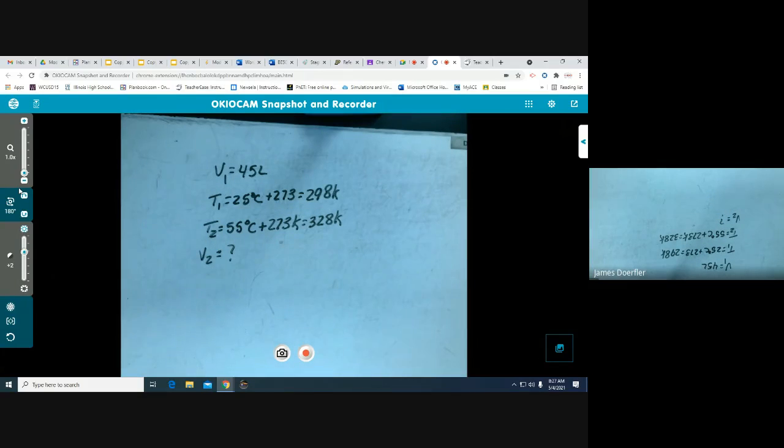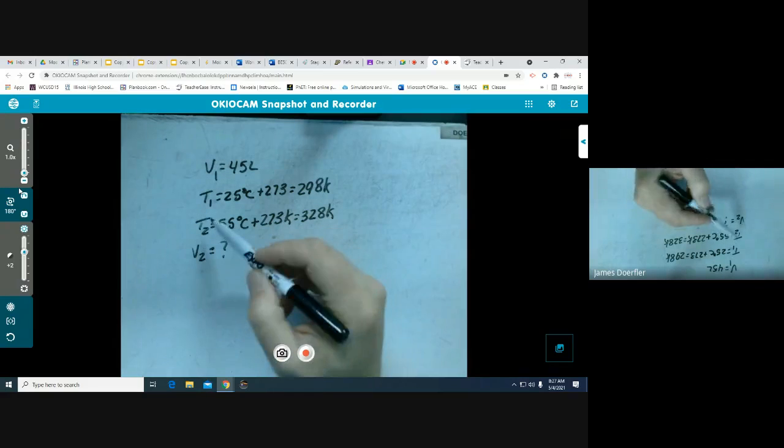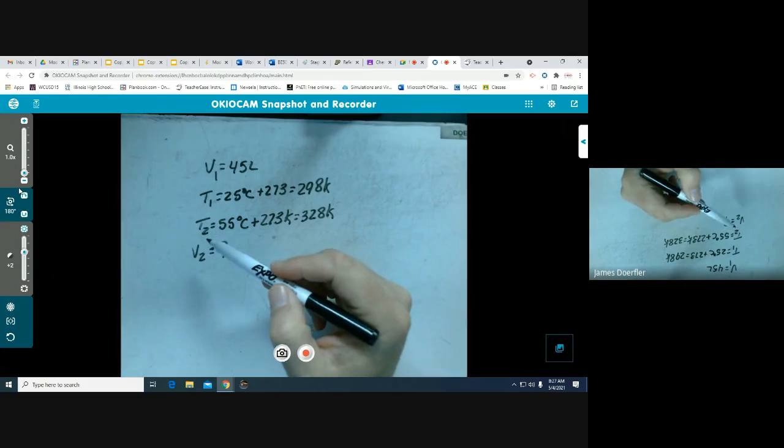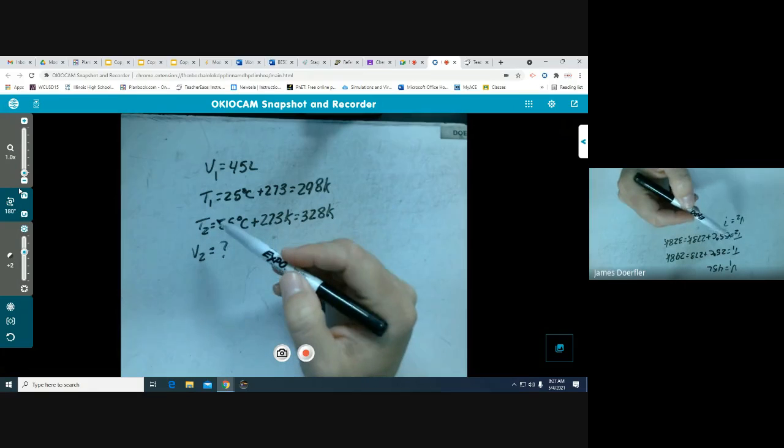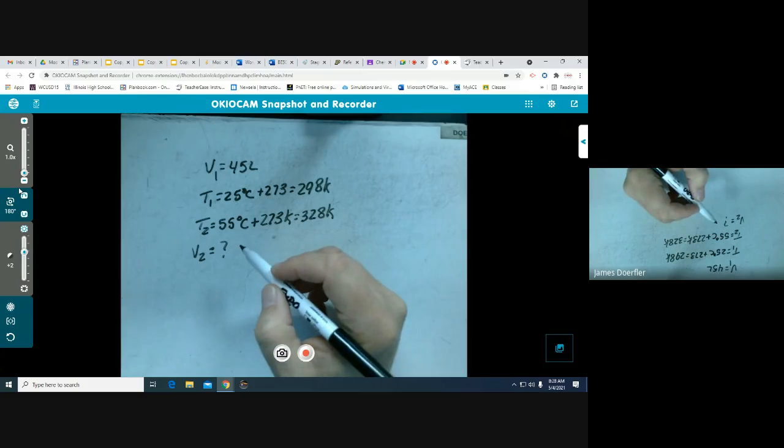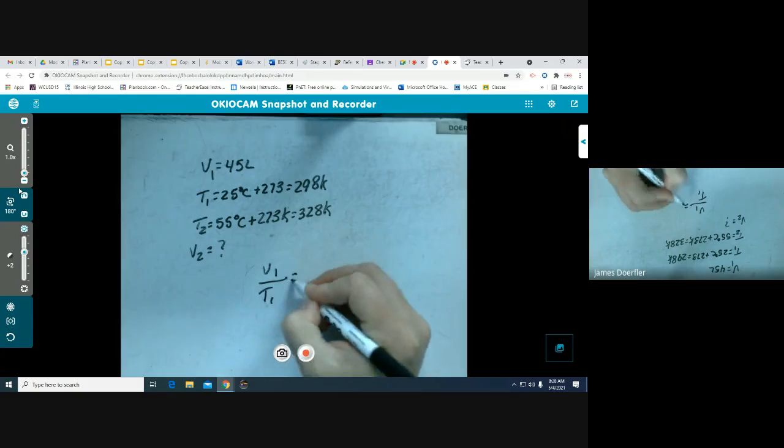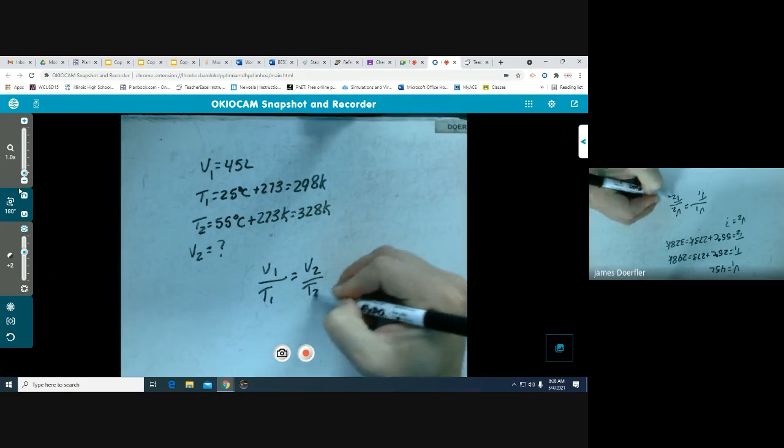So our T2, we convert that to Kelvin, 273, and we'll get 328 Kelvin. What we are trying to solve for is what is the new volume of the balloon. Taking a look at what we know, we've got volume and temperature. If we look back at the two laws, we see that temperature is not being held constant, but pressure is assumed to be held constant because we're not told anything different.